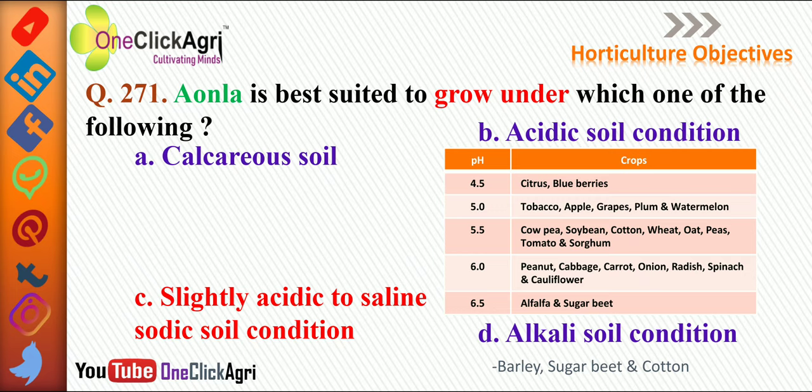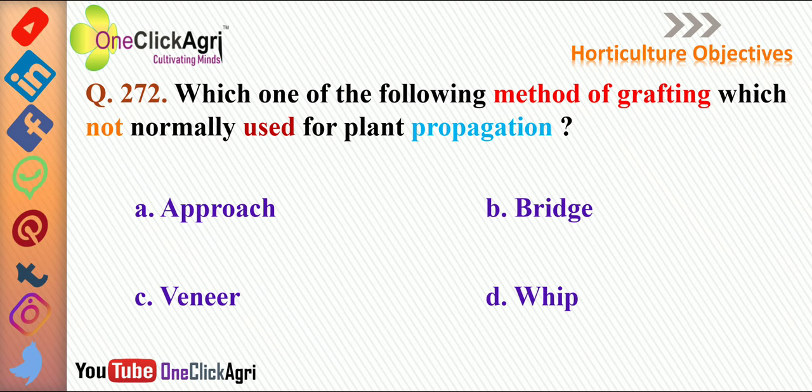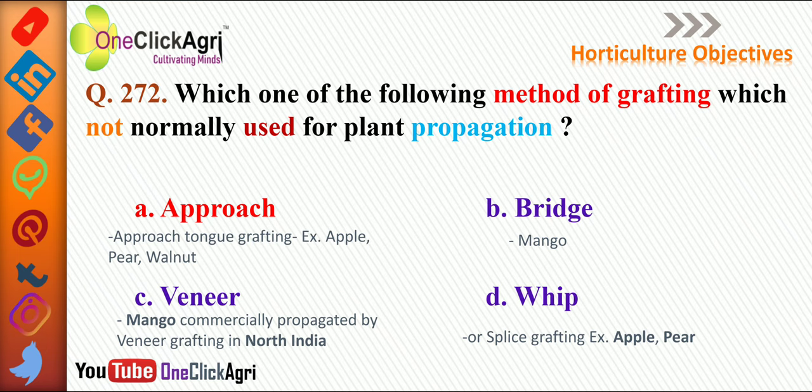Next question: Which method of grafting is not normally used for plant propagation? The right answer is approach grafting. In apple, pear, and walnut, approach tongue grafting is used. In mango, bridge grafting is used, and mango is commercially propagated by veneer grafting in North India. Whip or splice grafting is used in apple and pear.